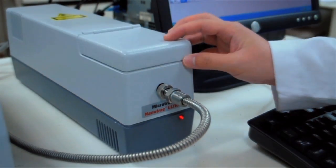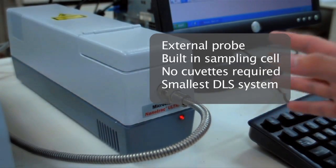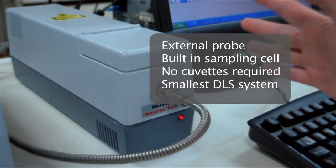The Nanotrack is the smallest and lightest dynamic light scattering system that is commercially available in the market.